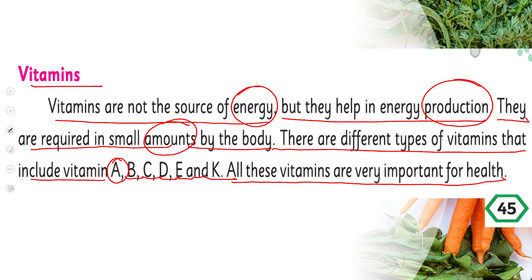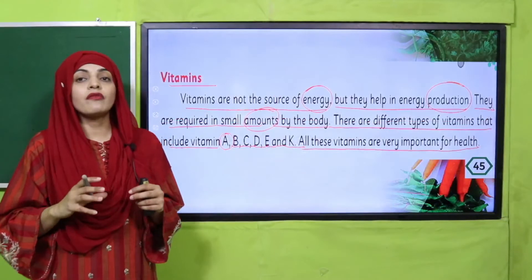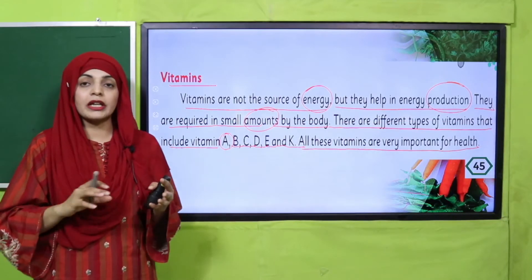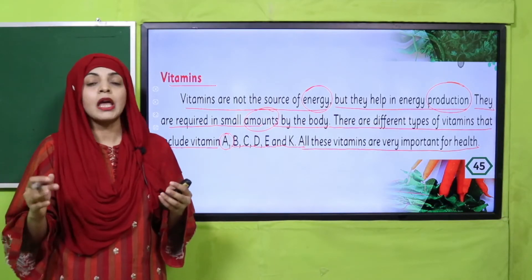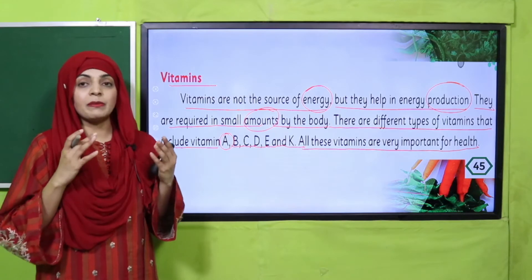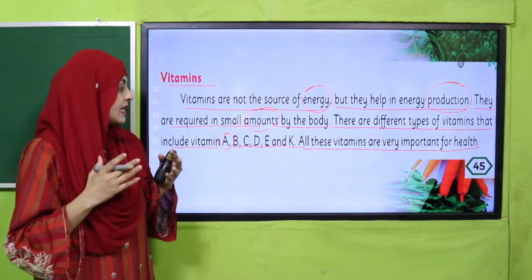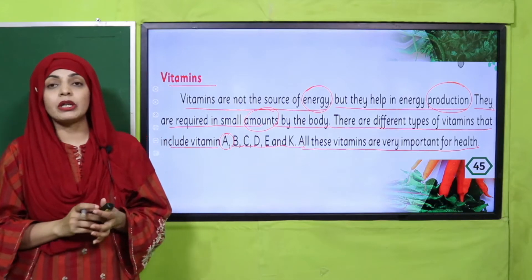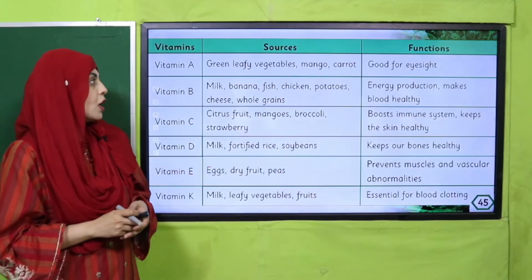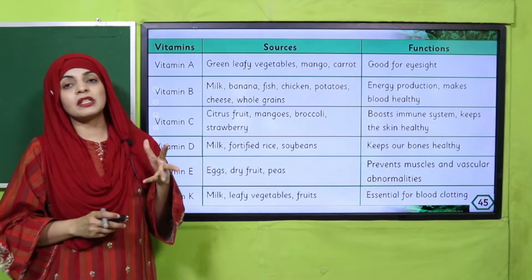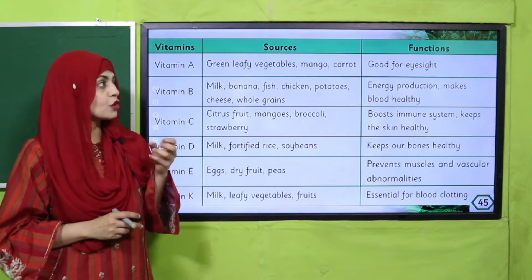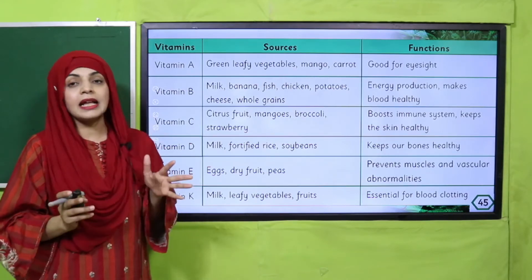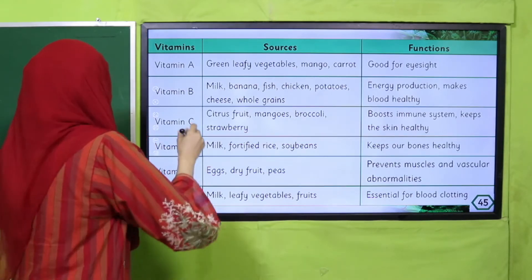Vitamins do not provide energy directly, but they are very helpful in energy production and energy use. They are found in different foods. The important vitamins are A, B, C, D, E, and K, and all of these are very important for your body. Let's read in detail about each vitamin — its source and its function.